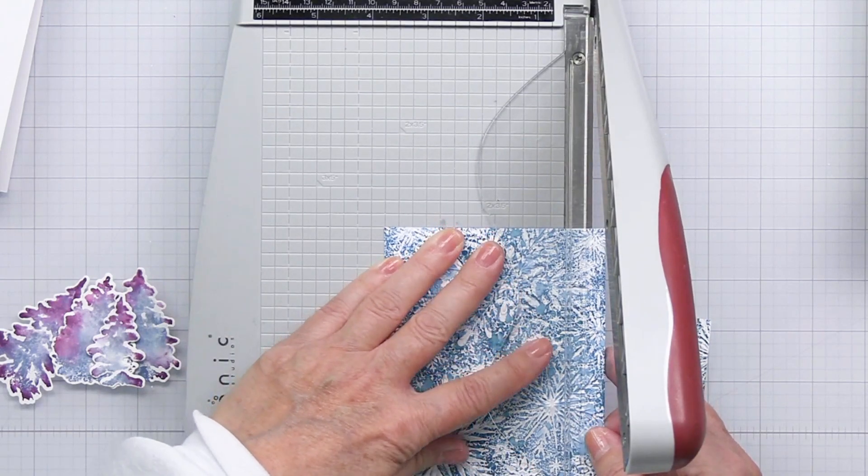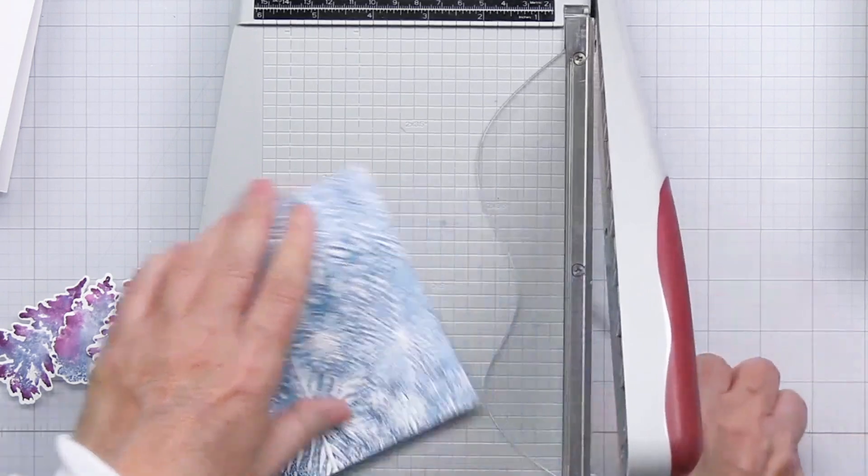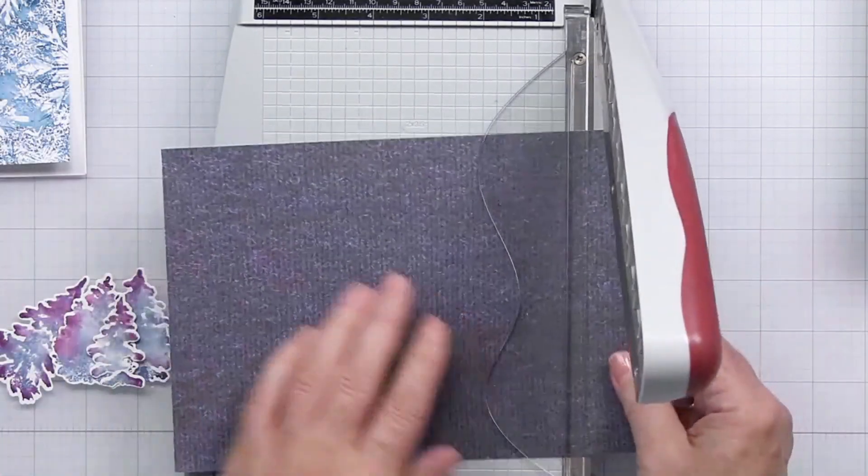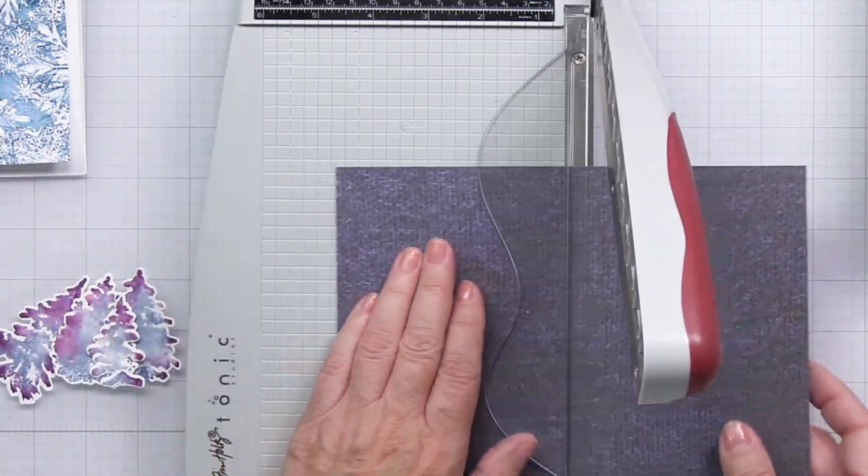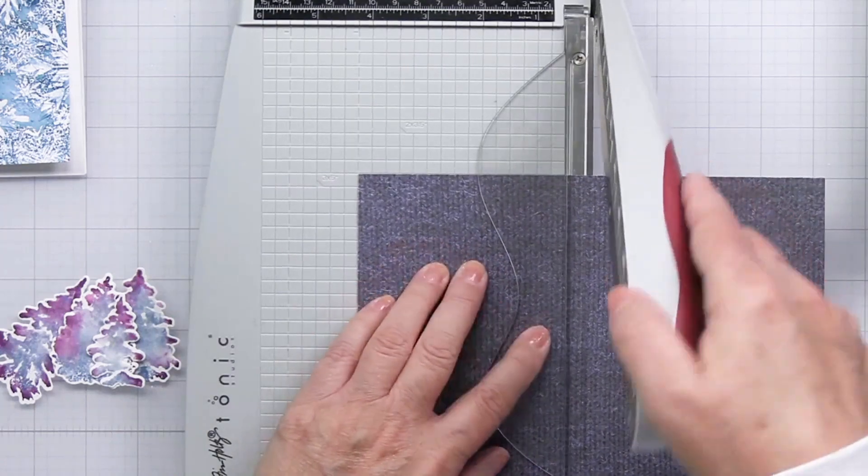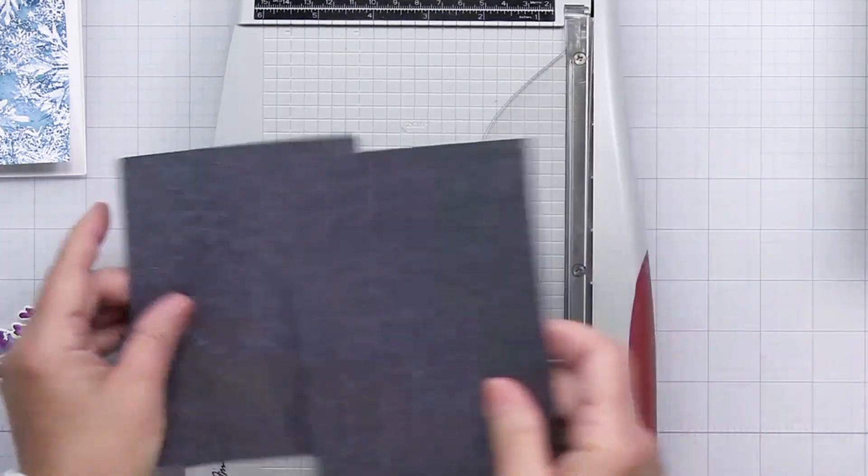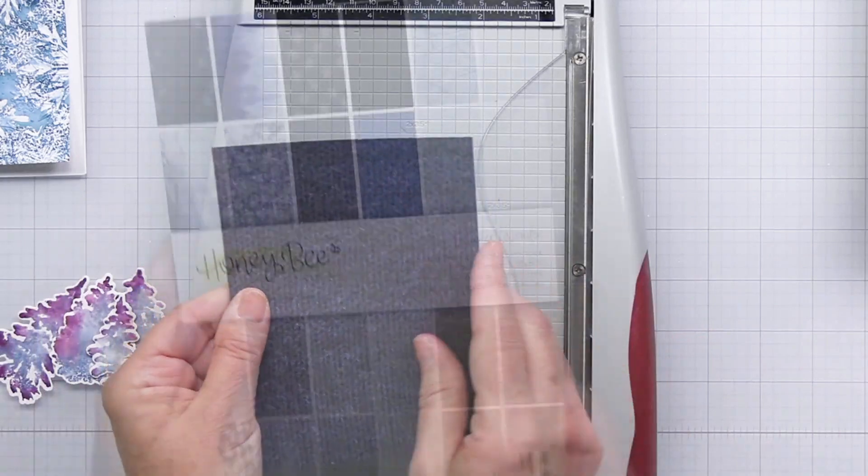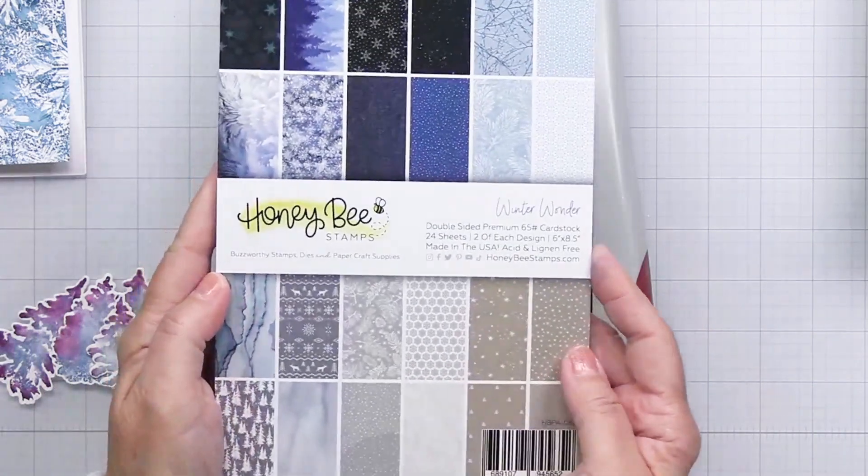At first I thought I might just size it to five and a quarter by four inches, but then I decided I wanted a mat. This is a paper from that eight and a half by six inch paper pad, and what's beautiful is when you cut these papers in half you have a paper that's large enough for two A2 size cards.